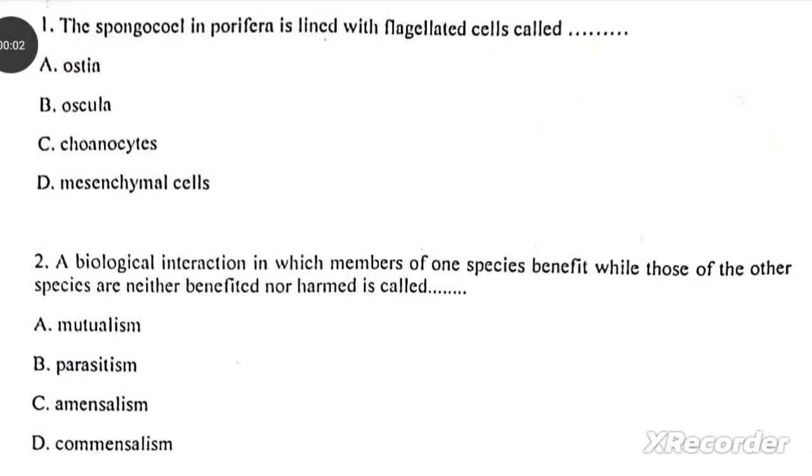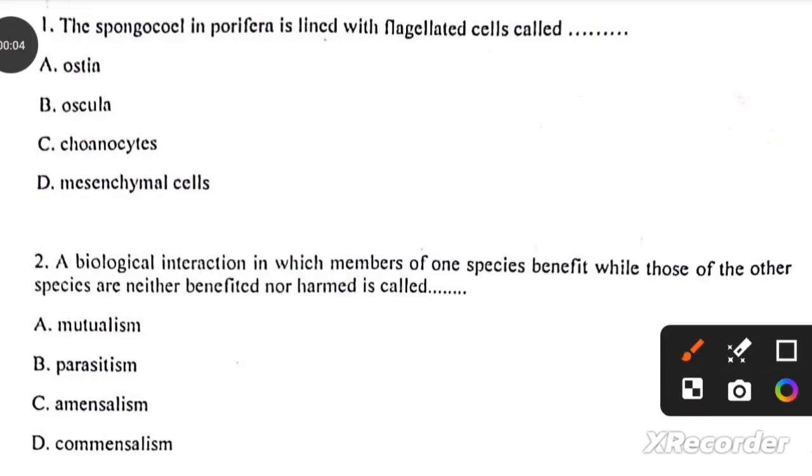Mongeocole in periphera is lined with flagellated cells called C. A biological interaction in which members of one species benefit while those of the other species are neither benefited nor harmed is called commensalism.